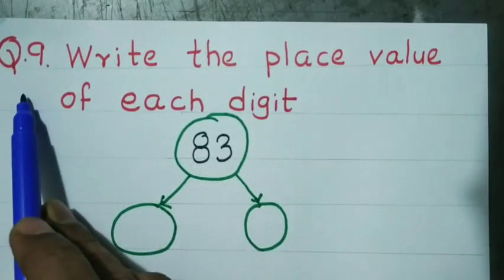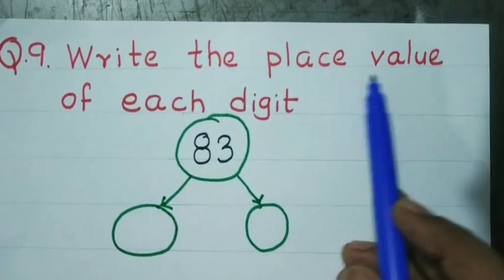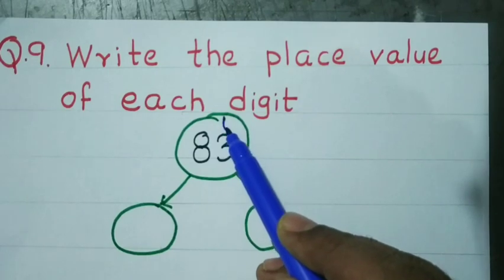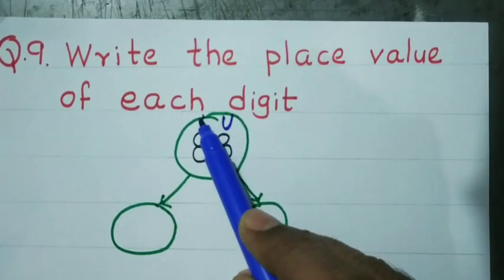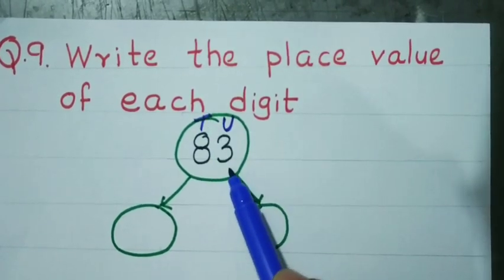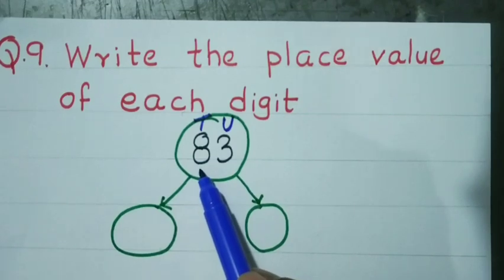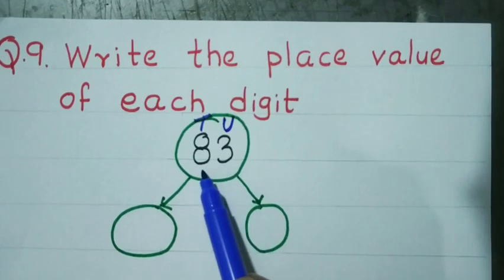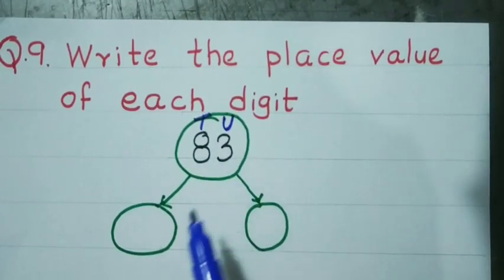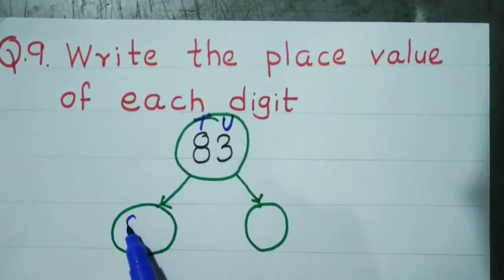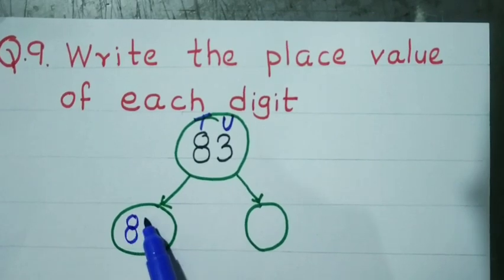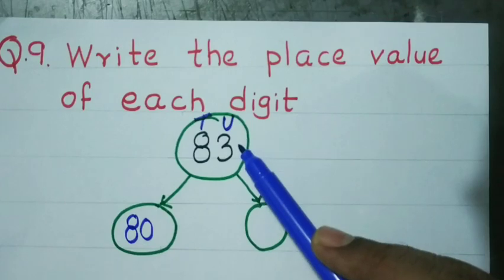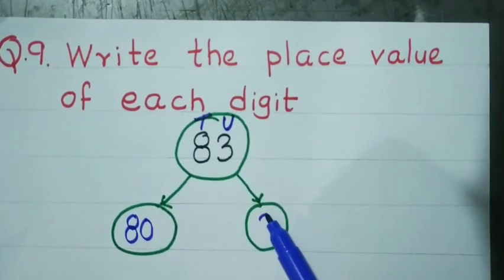Question number 9: Write the place value of each digit. A two-digit number means two places — one is the units place and the other is the tens place. The number is 83. 8 is at the tens place, so its value is 80. Whereas 3 is at the units place, so the value of 3 is just 3.